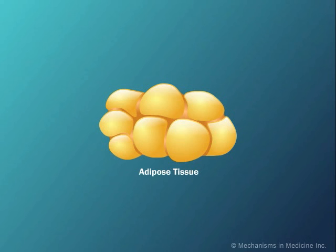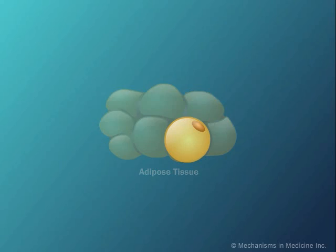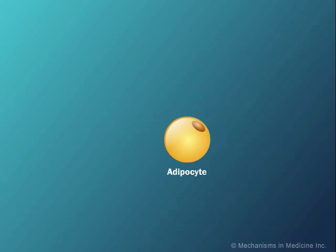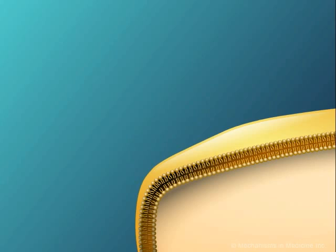We will be starting our journey with the adipocyte. Adipose tissue is loose connective tissue composed of cells called adipocytes. In the skin, adipose tissue provides insulation, whereas around organs, it serves as a protective padding. In addition, there is increasing evidence on the important role of the adipocyte as an active endocrine and paracrine organ, which secretes a large number of adipokines.